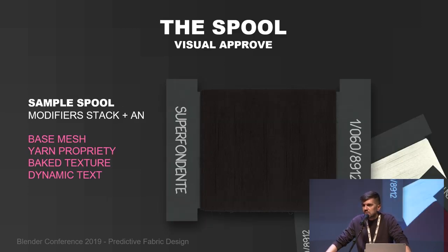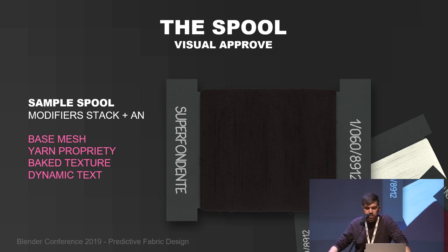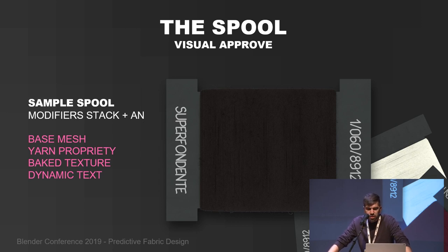We use this same approach to generate the spool — the yarn wrapped around cardboard with a curve — creating something more realistic than a single yarn. We use Animation Nodes to change the color and name of the yarn for each render. In our database there are more than 2,000 yarns and more than 6,000 fabrics generated per year by our customers, so automating the naming of each yarn is important.